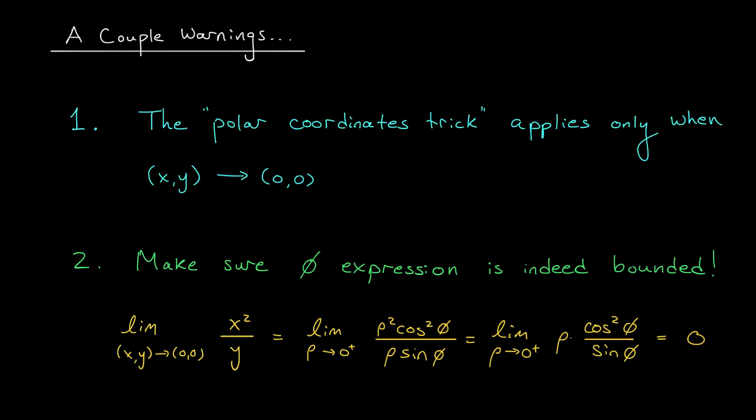I'm going to end this video with a couple words of warning about using polar coordinates to evaluate multivariate limits. Firstly, our polar coordinates trick only applies to limits where both x and y are going to 0. If x or y is not going to 0, well, we can still use the trick, but we first have to convert to a limit of this form. Maybe I'll say a bit more about this on piazza.